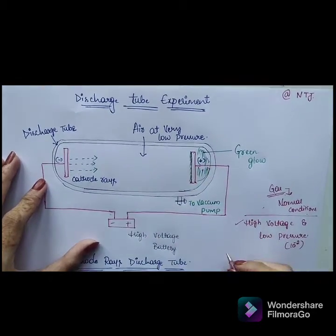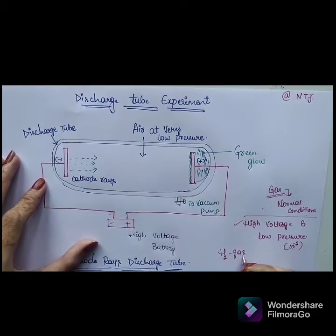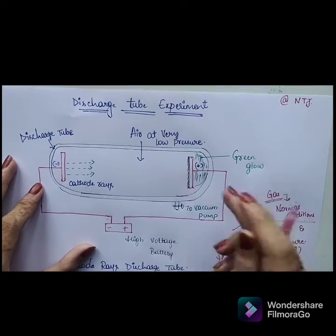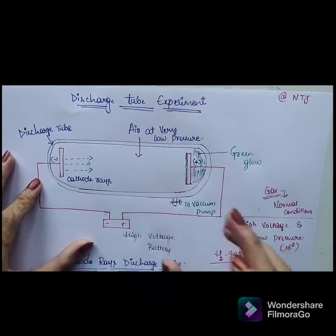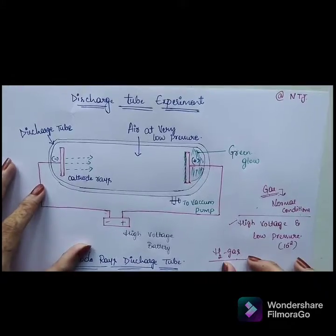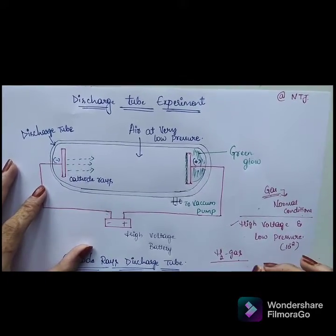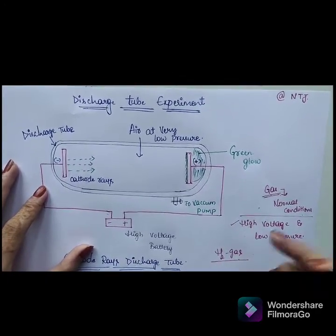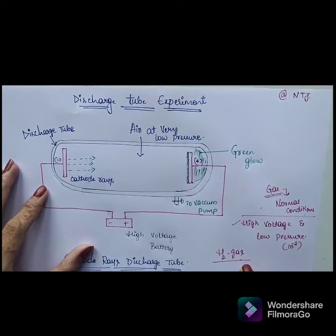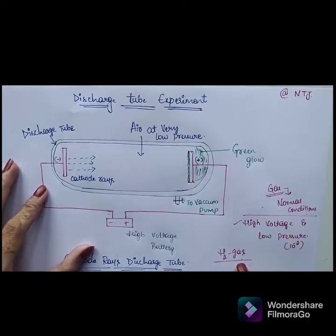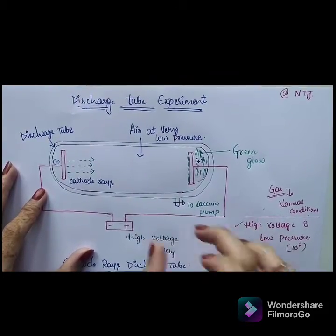In this discharge tube experiment, we are usually taking hydrogen gas, which is subjected in this evacuated tube. Why hydrogen gas? Because it is the lightest gas and upon ionization it gives a maximum charge. That's why we are taking hydrogen gas in this experiment.